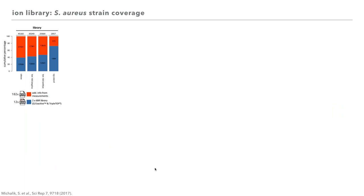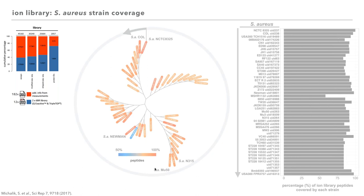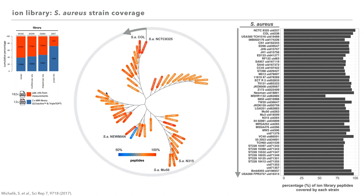The constructed ion library consists of roughly 2,000 proteins, representing 72% of the theoretical proteome. Since several S. aureus strains exist, we wanted to know if the generated ion library can be used for strains other than ours. We used a derivative of the NCTC 8325. In an unrooted phylogenetic tree of 46 strains, we performed an in silico digest and compared the theoretical peptides to those in the ion library. On average, 80% of the ion library is covered by the theoretical digest of other strains.